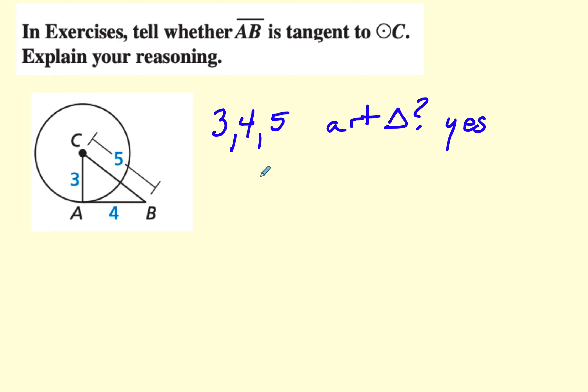So this is a tangent, because AC is perpendicular to AB. We found a right angle, so we know we have perpendicular lines.